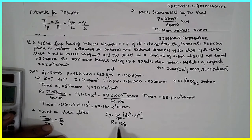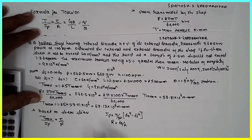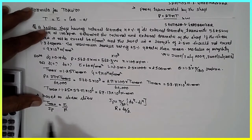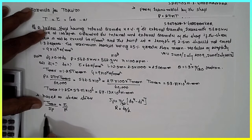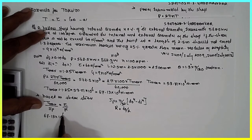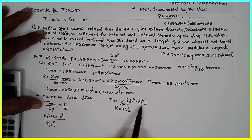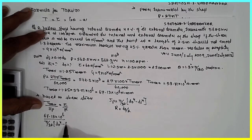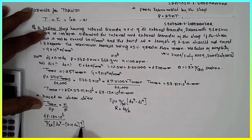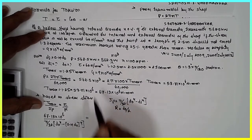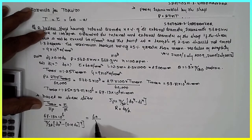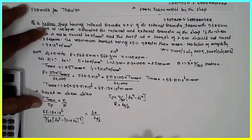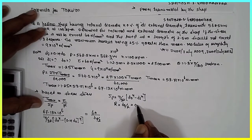For a hollow shaft, R = D0/2, which can be written as 0.5 D0. In place of Di, substitute 0.4 D0. So: 67.13 × 10⁶ = [π/32 × (D0⁴ − (0.4 D0)⁴)] × 60 / (0.5 D0). Cross multiply to collect the D0 terms.